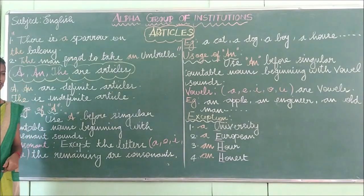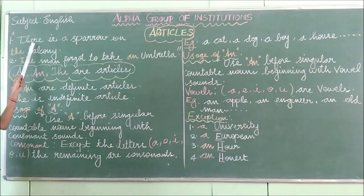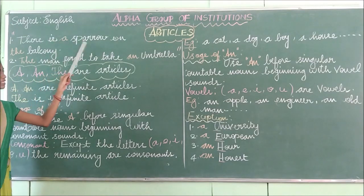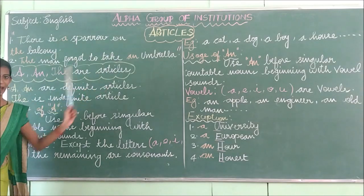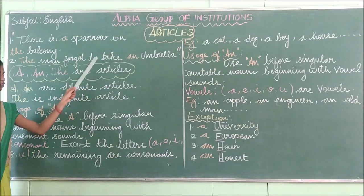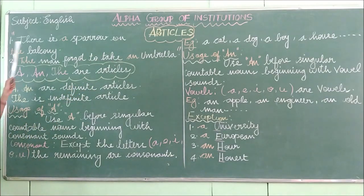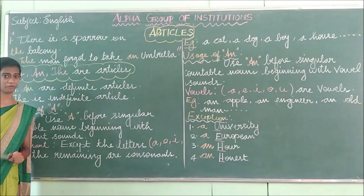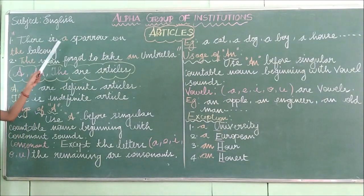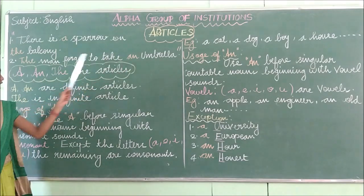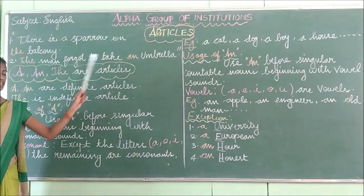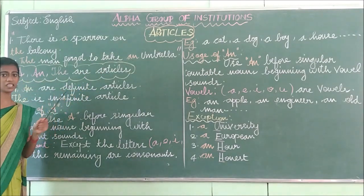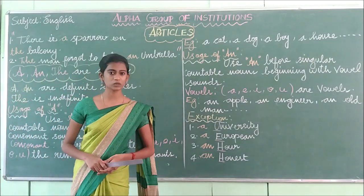Now let us read those sentences. The first sentence is: there is a sparrow on the dolphin. And the second sentence is: the man forgot to take an umbrella. In these two sentences I have highlighted some words. So what are those words? 'A', 'the', and 'an'.